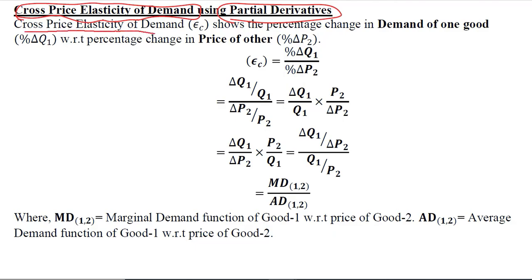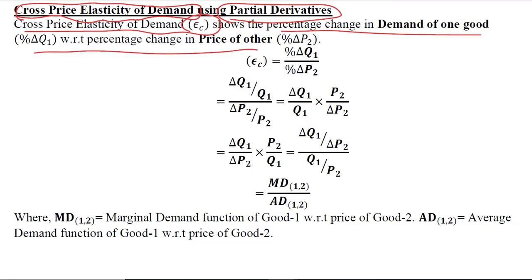The cross price elasticity of demand is represented generally by epsilon C, where the subscript C indicates cross price elasticity. It shows the percentage change in demand of one good with respect to the percentage change in the price of the other good. So the first good is Q1 and the second good has price P2 — the ratio of the percentage change in quantity demanded to the percentage change in the price of the other good.